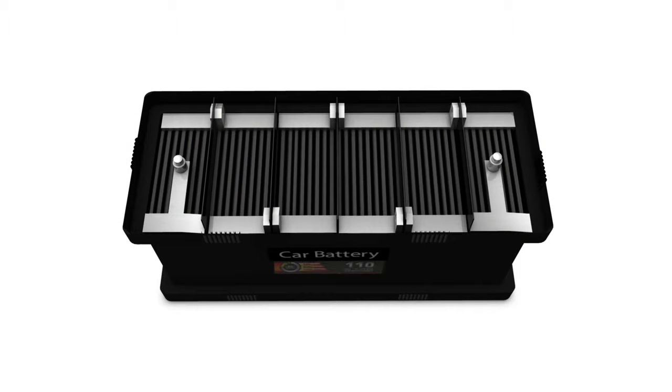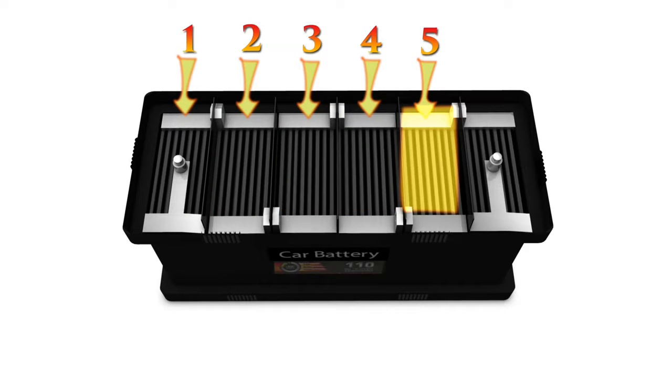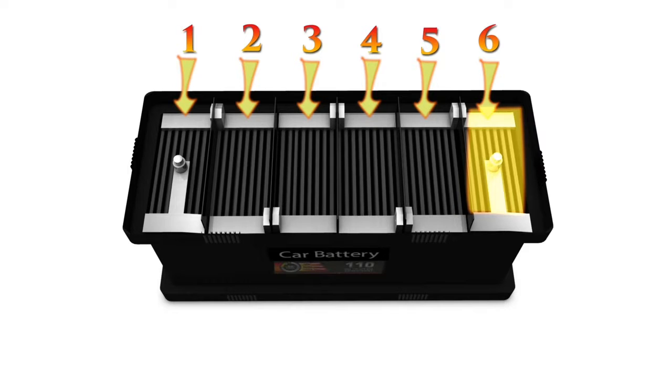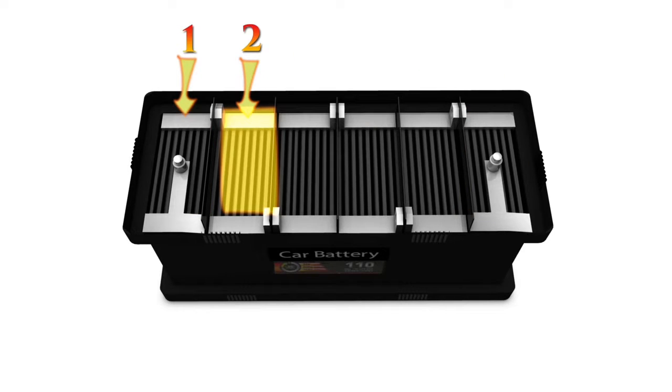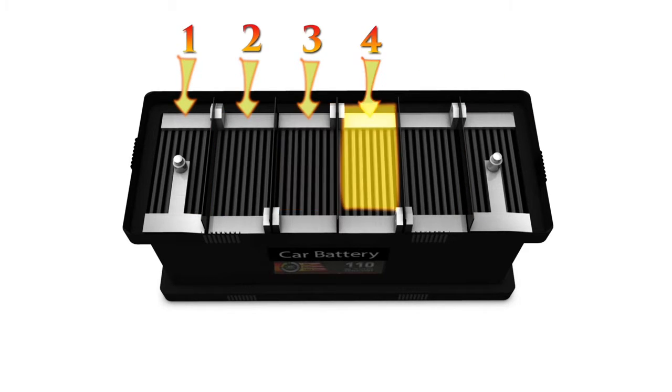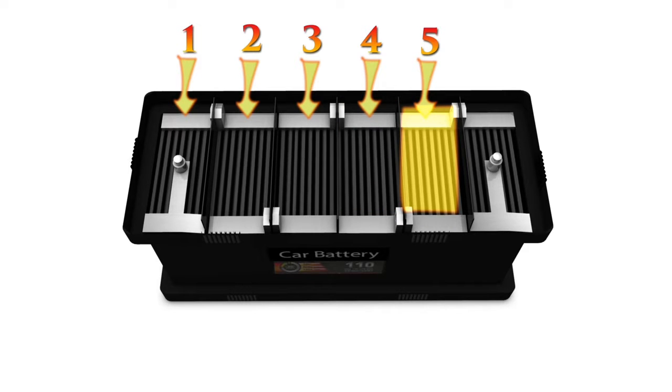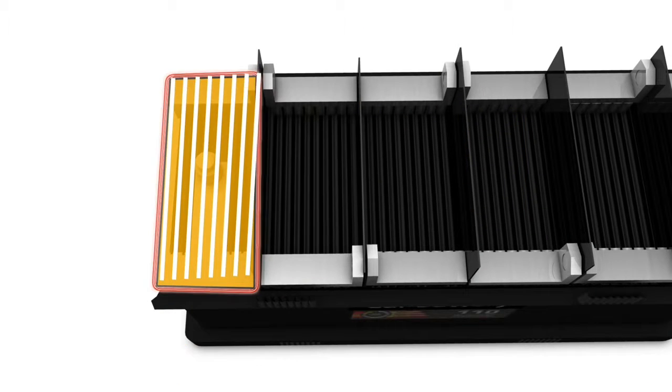Inside the car battery there are six separate compartments called cells. Each of these cells produces 2.1 volts of electricity, and when all six are linked inside the battery, they produce 12.6 volts in total.